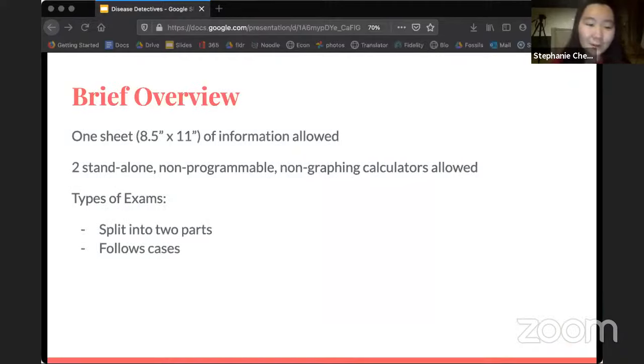This is just a brief overview of what you will need to bring to the event. Basically you have one sheet front and back of a paper that you can fill with all the information you want. You'll have two standalone scientific calculators. There are mainly two types of exams. One is a test that's split into two parts, one with definitions and overall questions about diseases, and the other half is maybe a storyline of a case where you have to do more of the mathematical components with statistical variables and graphs. And then the second type of test just follows cases throughout the entire test, and you just have to answer questions based on this storyline.